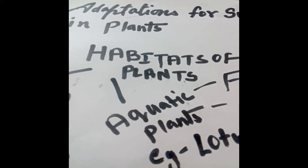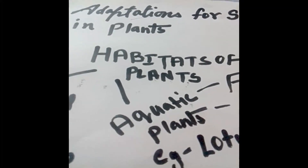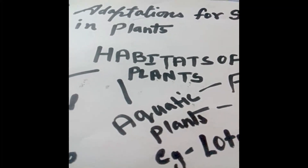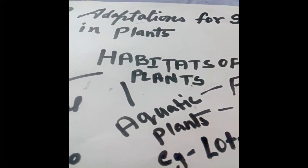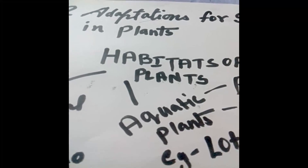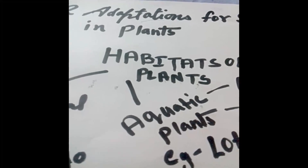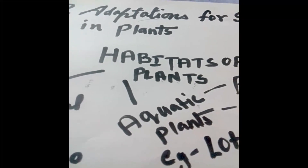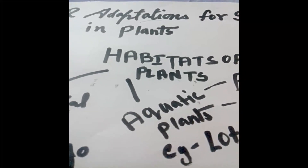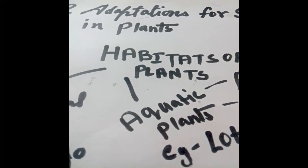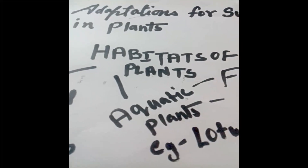As you have heard in a previous class, aquatic animals are those animals which live in water only and cannot survive out of water. In the same way, aquatic plants means those plants which can live only in water. Aqua means water. Aquatic plants have adapted themselves amazingly to survive in water.